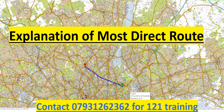Hello guys, welcome to another video. In this video I'm going to explain the most direct route. When TFL asks you to draw the most direct route from green to red, it should look like a straight line. In some questions you get tunnels or road closures so you cannot get the straight line, but you still have to get the most direct route in those cases as well.